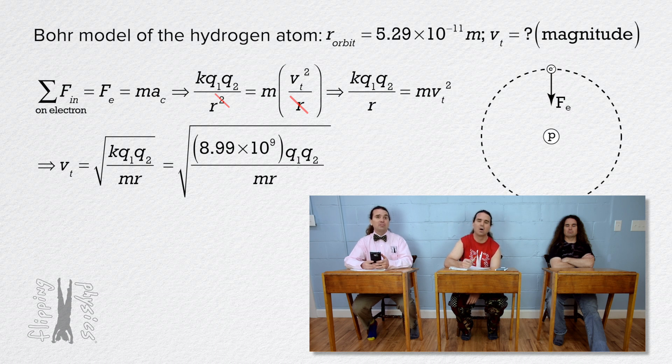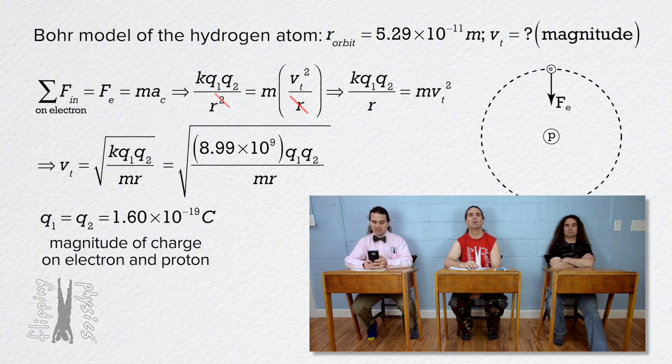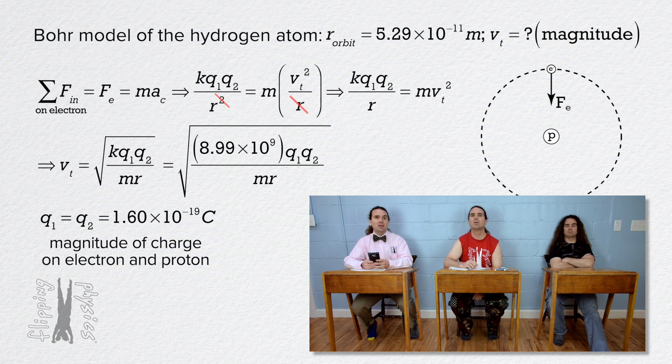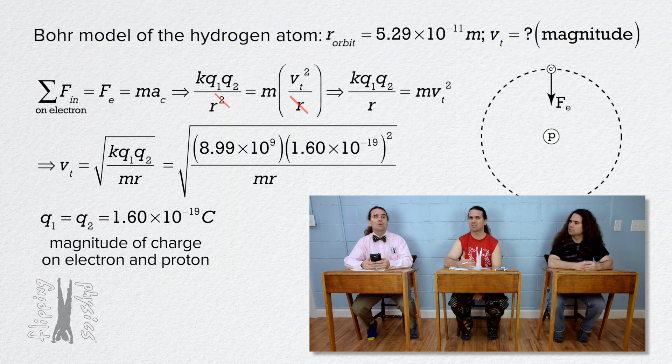With numbers that is the square root of the quantity 8.99 times 10 to the 9th times, well, both of those are the magnitudes of the charges of the proton and electron, which are both 1.6 times 10 to the negative 19th Coulombs, and so we square that number. But the charge of a proton is positive and the charge of an electron is negative. So, one charge should be negative and one should be positive, right?